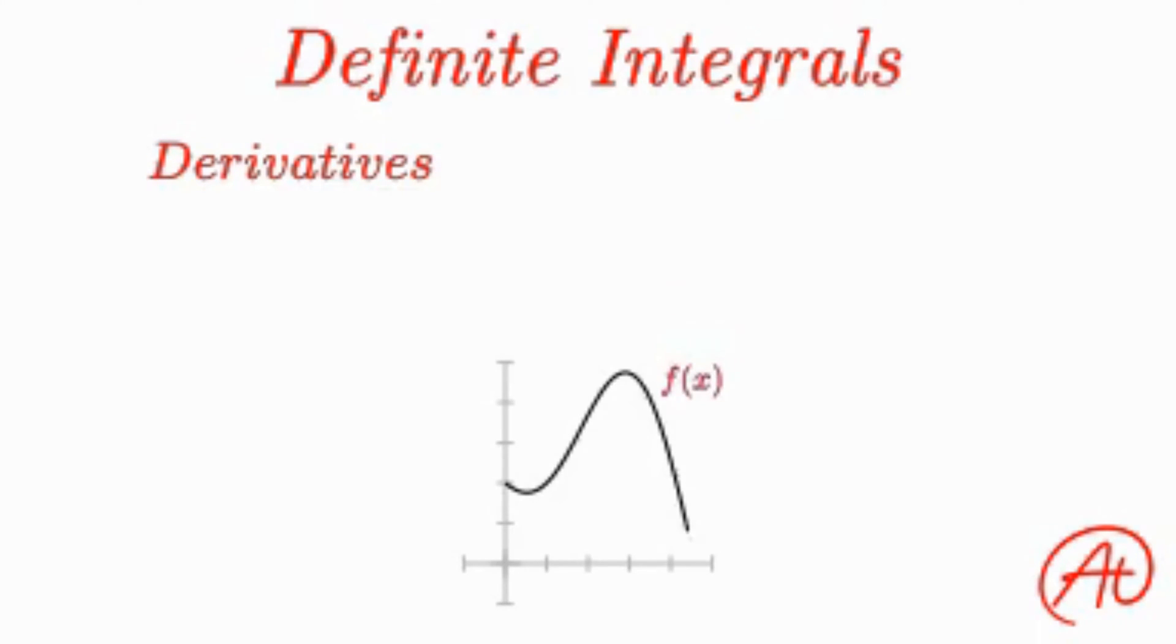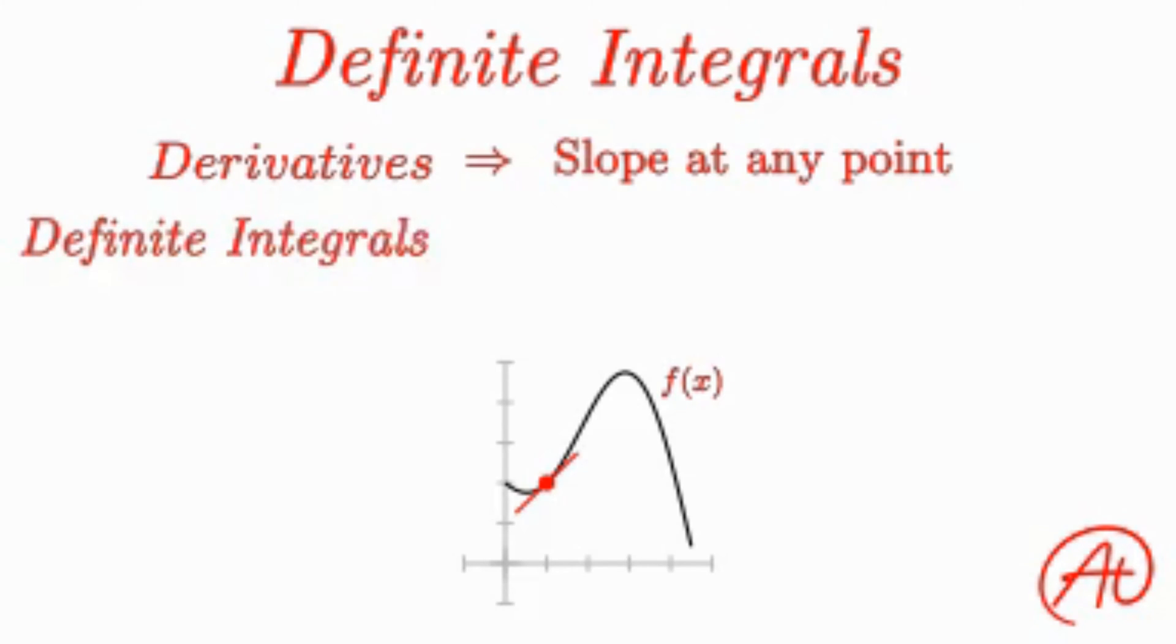If you had a curve like this and were asked to find the derivative, you'd be finding a way to get the slope at any point, like this. If you were asked to find a definite integral, instead of the slope at a point, you'd be finding the area under a curve between two points.